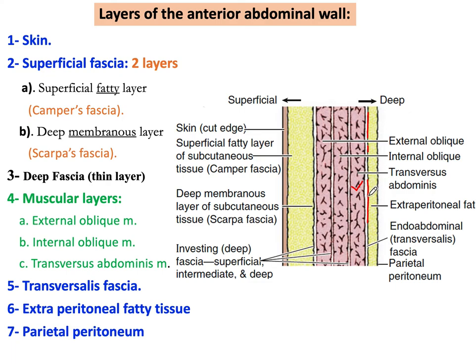Deep to the transversalis fascia there is another fatty layer, known as the extra-peritoneal fatty tissue. Lastly, the deepest layer is a layer of peritoneum — the parietal peritoneum.